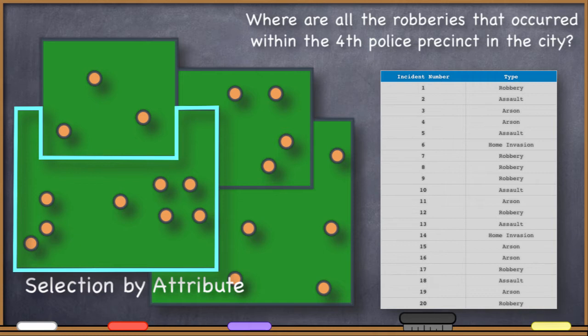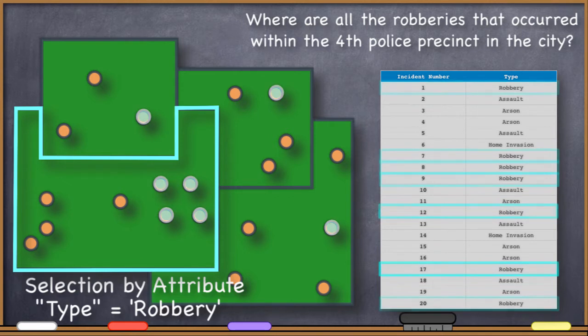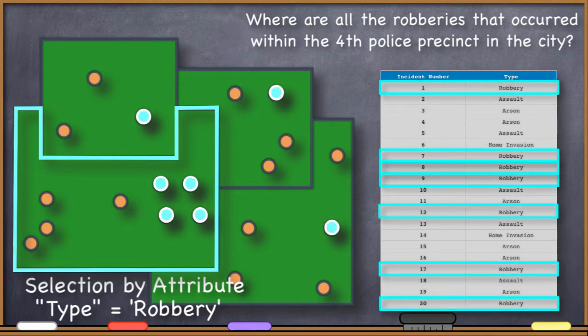Maybe in that crime data file, the type of crime is stored in a field in the attribute table called type. So you would make the SQL query type is equal to robbery, type in double quotes, robbery in single quotes. And then this would query that crime data file for all features that happen to be robberies. It returns that selection.